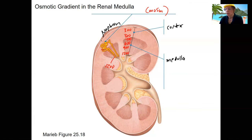So the osmolarity of the interstitial fluid of the renal medulla increases progressively from 300 near the cortex-medulla junction down to 1,200 at the medulla-pelvis junction, the renal pelvis.